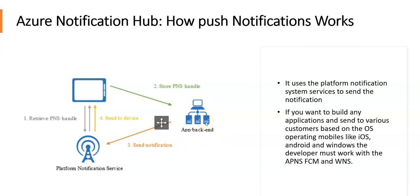To send a push notification, the app backend contacts the PNS using the handle to target the specific client app. The PNS then forwards the notification to the device specified by the handle — on operating systems such as iOS, Android, and Windows.